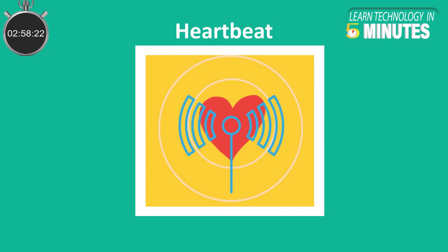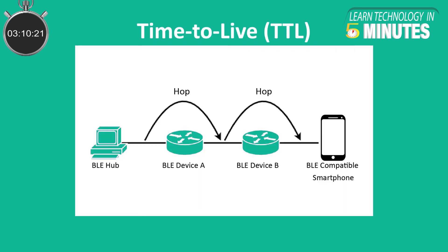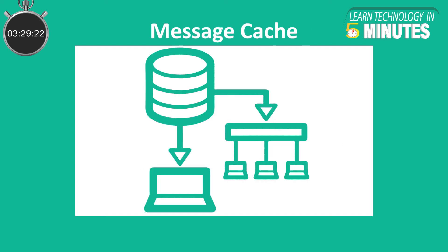The reliability of message delivery in BLE is ensured through three features. First, Heartbeat — each node sends heartbeat messages periodically to inform other nodes that it is active, and it helps recipient nodes calculate the number of hops required to reach the heartbeat source. Second, TTL (Time to Live) — each message contains a TTL value restricting how many times it can be relayed; each time the message is relayed, the TTL is decremented by 1, and heartbeat messages help the source node set the correct TTL value. Third, Message Cache — each node maintains a cache of recently received messages; when a node receives a message, it checks the cache and ignores the message if it is already present.